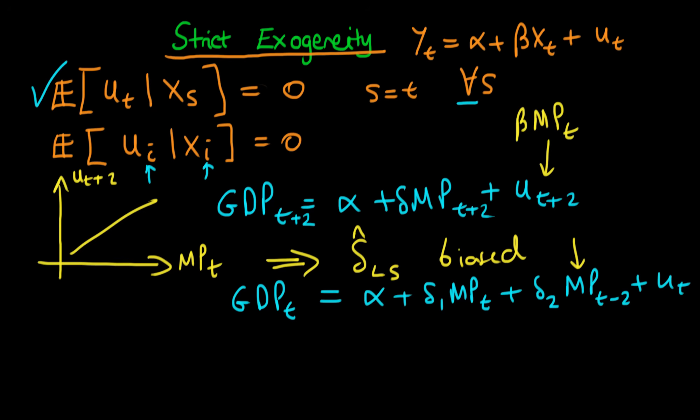Another way we can have a violation of strict exogeneity is when sales at time t is dependent on advertising at time t. It's frequently the case that advertising at period t+1 is some function of the sales which the company achieved at time t. And we know that sales at time t is itself some function of the error ut.